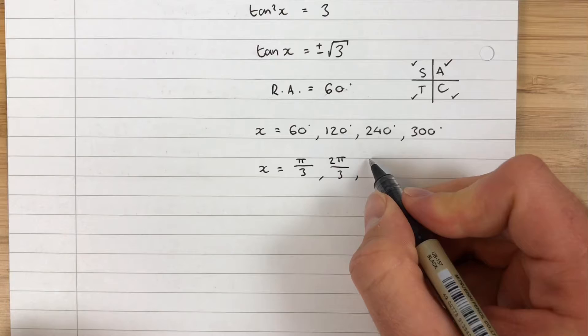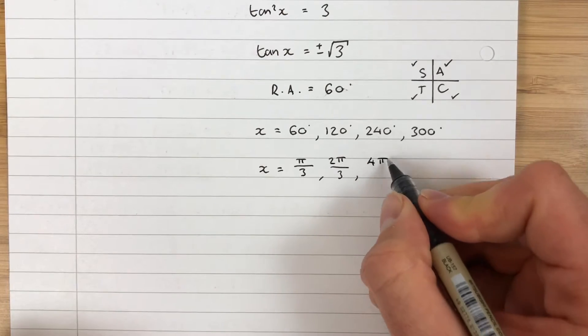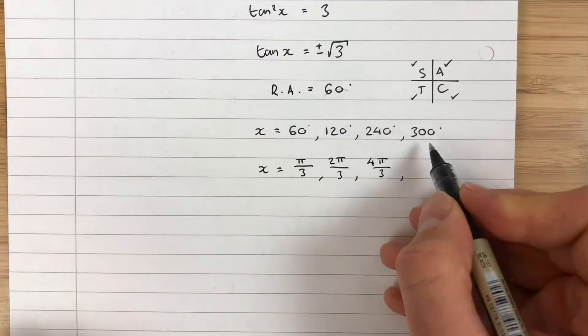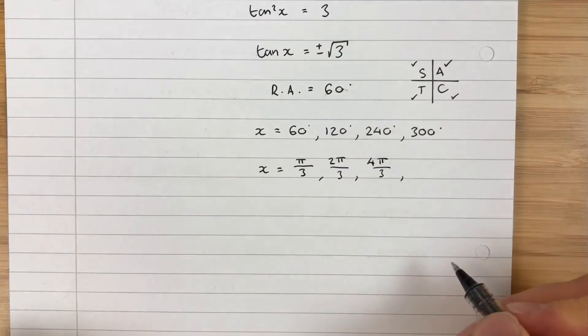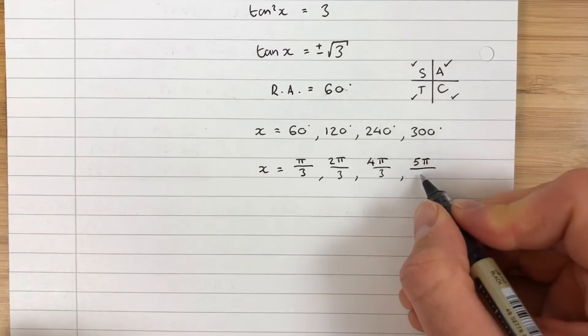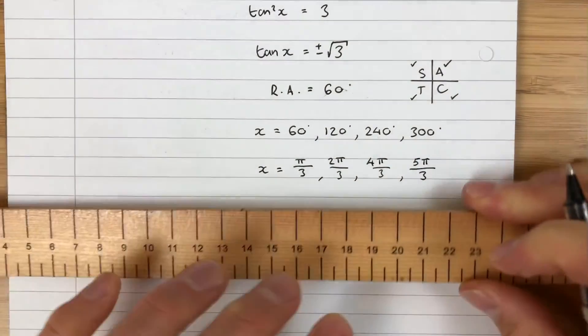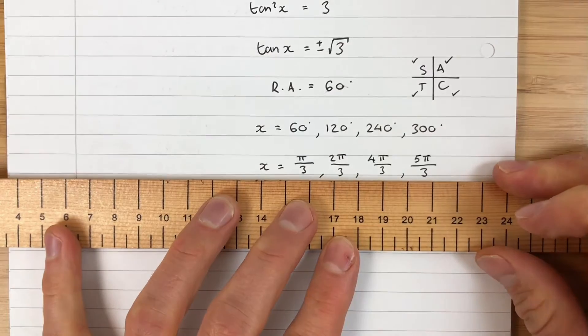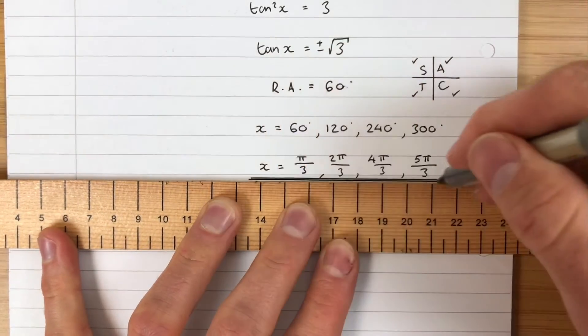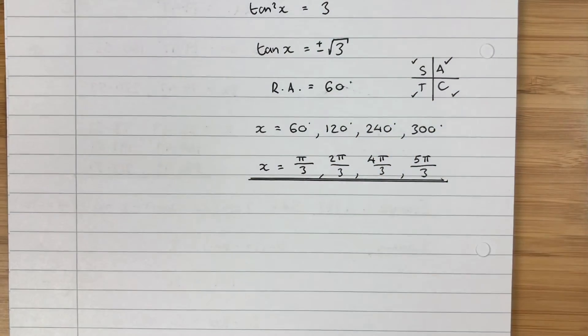60 goes into 240 four times, so this is 4π/3. And then the last one, 60 goes into 300 five times, so this will be 5π/3. And those are my answers in radians.